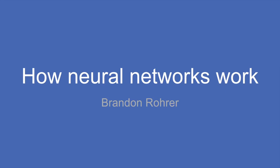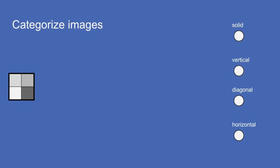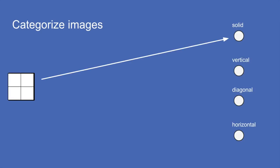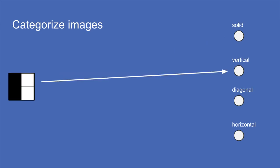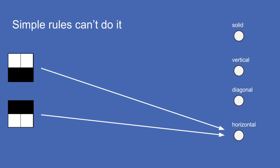Neural networks are good for learning lots of different types of patterns. To give an example, imagine you had a four-pixel camera — not four megapixels, just four pixels — and it was only black and white. You wanted to take pictures of things and determine automatically whether these pictures were of a solid all-white or all-dark image, a vertical line, a diagonal line, or a horizontal line. This is tricky because you can't do this with simple rules about the brightness of the pixels.